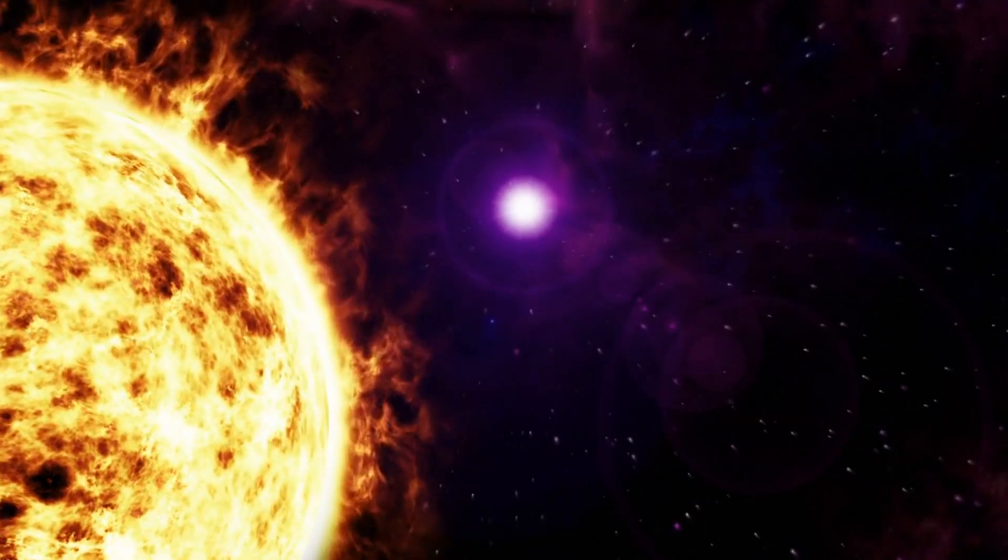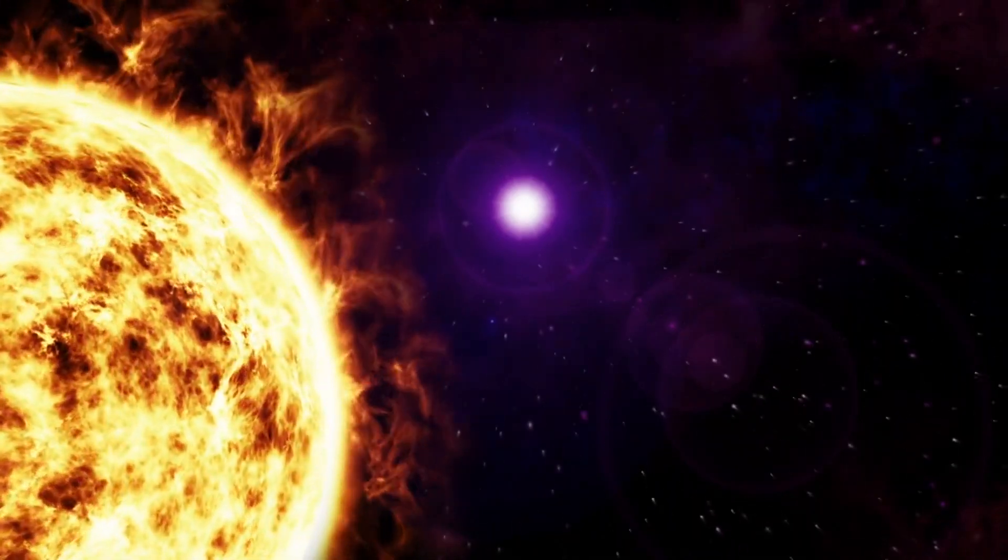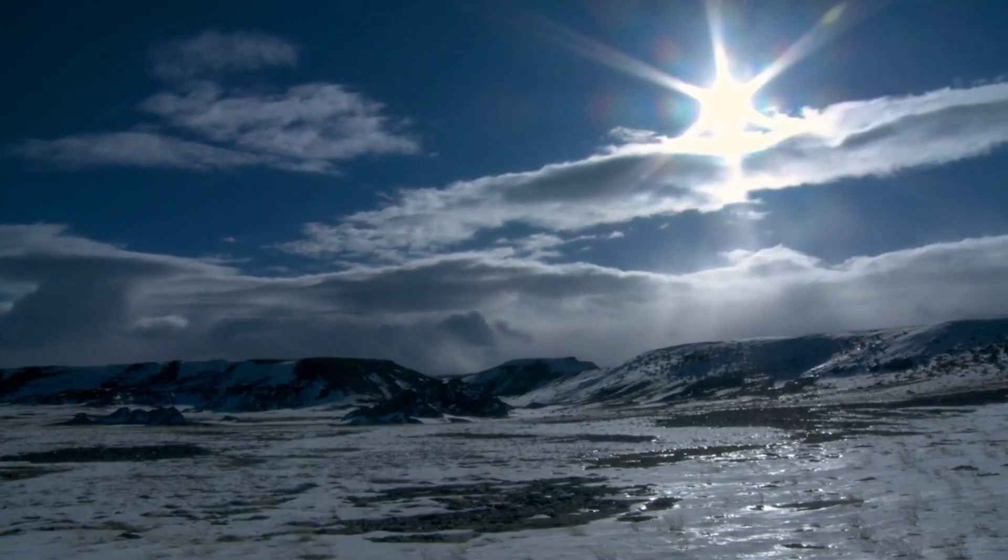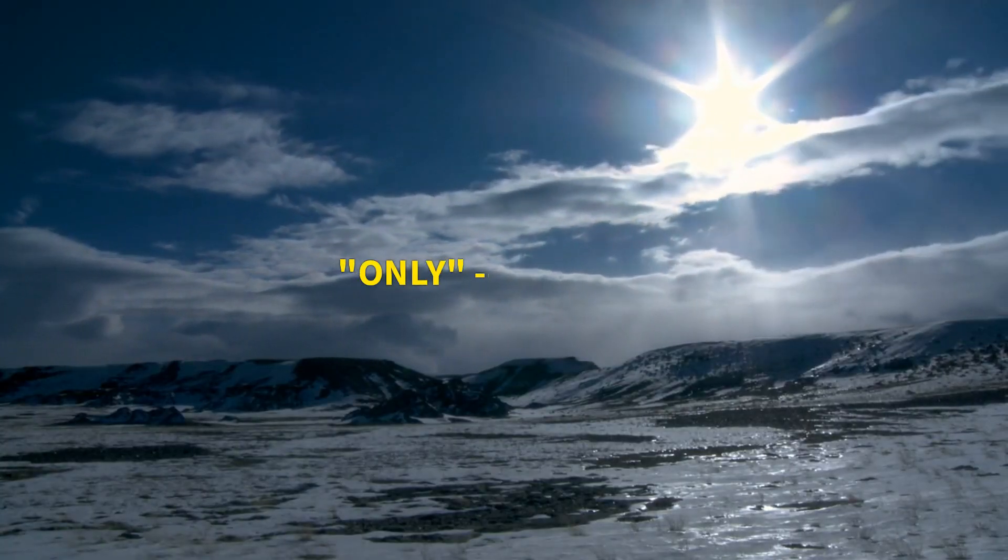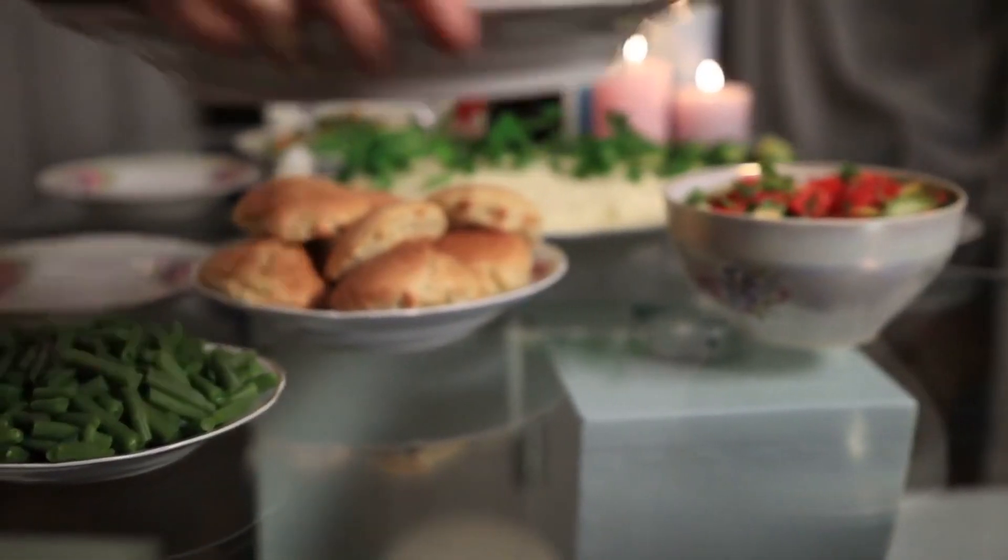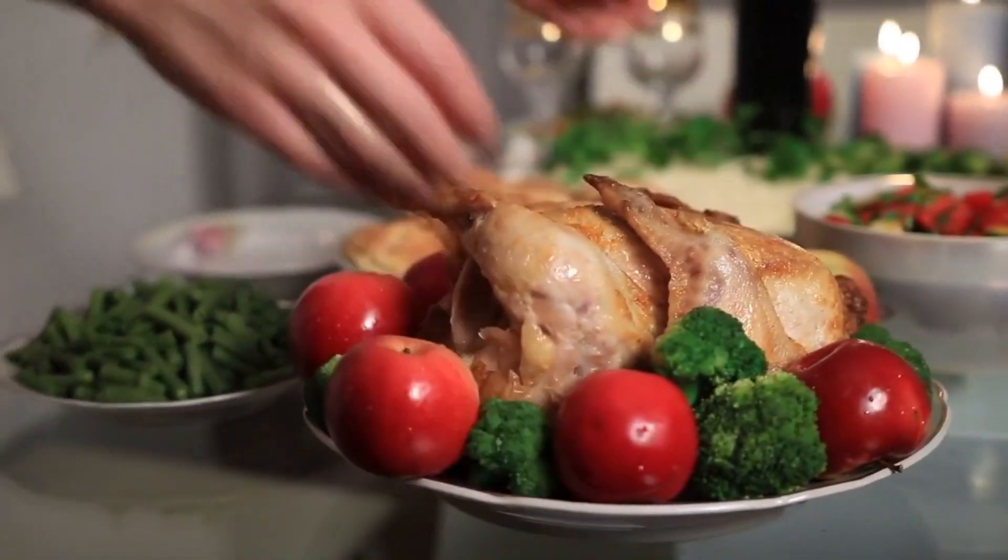Finally, we reach the photosphere, the visible surface of the Sun. Relative to the blazing core, the temperatures here are a frigid 10,000 degrees Fahrenheit. Still, it's plenty warm enough to cook your Thanksgiving turkey.